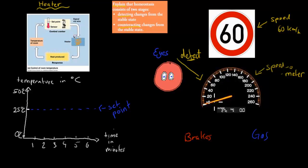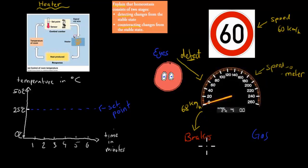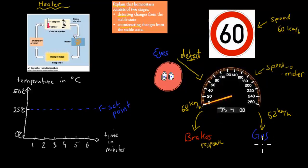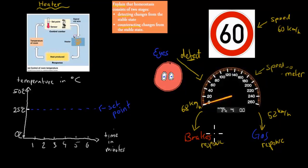For example, if we're driving at 68 kilometers per hour — that's 8 kilometers too fast — then we hit the brakes. The brakes is the response. If we're driving at 52 kilometers per hour, we could try to hit the gas to increase our speed again, and the gas is also the response. Both of these help us to counteract the change from the stable state. The stable state was 60 kilometers per hour, and the response brings it back to that holy grail of 60.